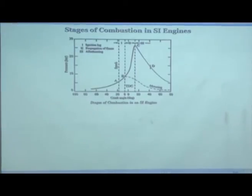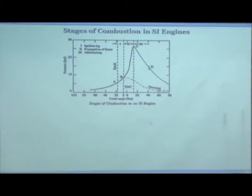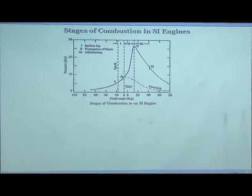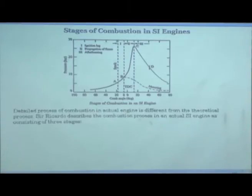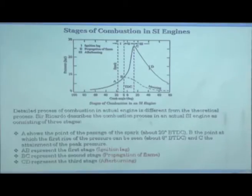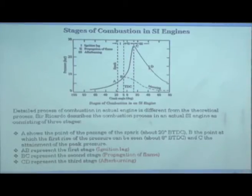Coming back to combustion in SI engines, if you look at the P-theta diagram: the motoring diagram and firing diagram are shown. Point A is where the spark is applied, the motoring curve starts separating from the firing curve at a certain point, followed by the peak pressure at another point, and then most of the heat release has taken place. This curve can be divided into three parts: A to B is ignition delay, B to C is flame propagation, and C to D is after-burning.